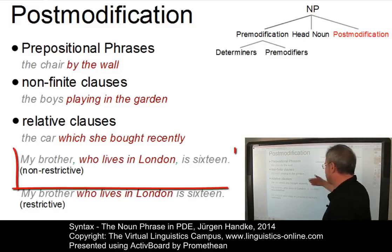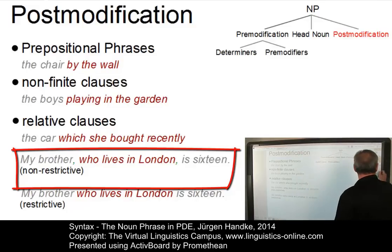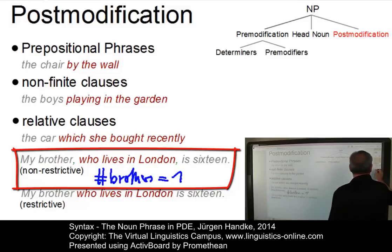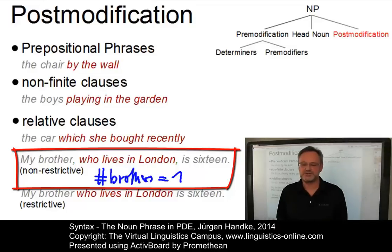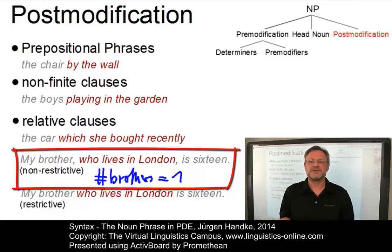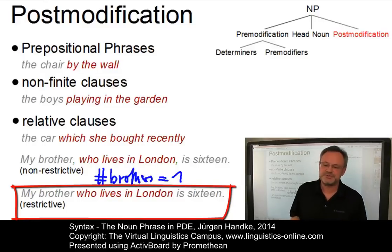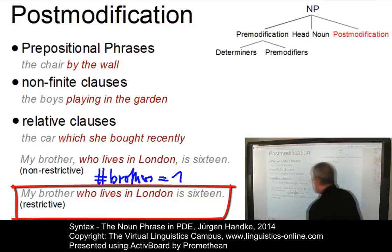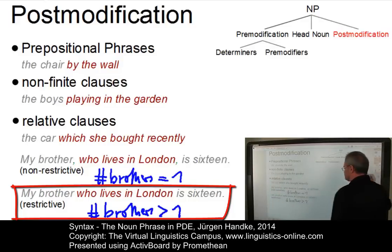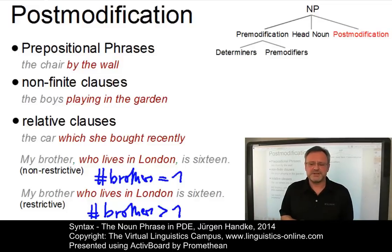Here are two examples. 'My brother, who lives in London, is sixteen.' In this case, the number of brothers is one, and we have a non-restrictive relative clause — the non-restrictive information is given a separate tone unit and is enclosed in commas. In the second example — also 'My brother who lives in London is sixteen' — the information is restrictive: I have several brothers but refer only to the one in London. The non-restrictive form is marked by a separate tone unit and commas.